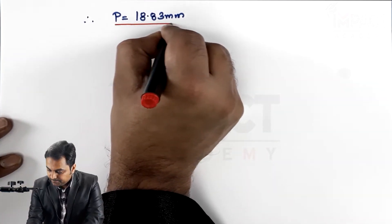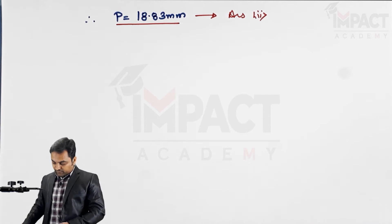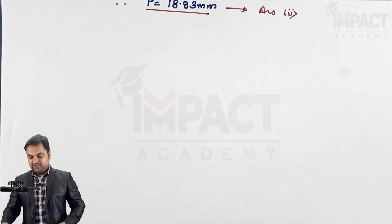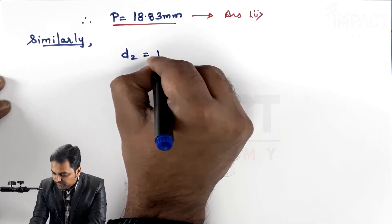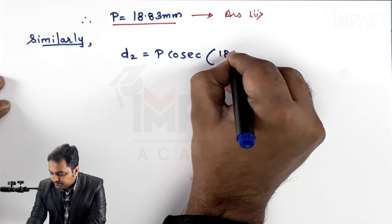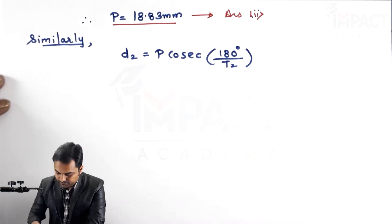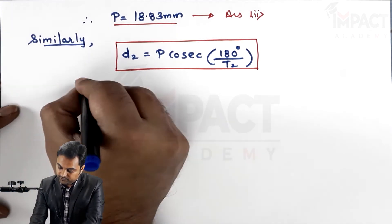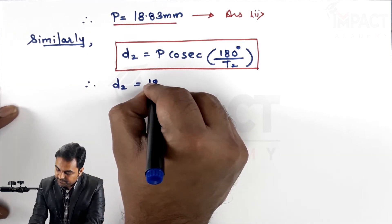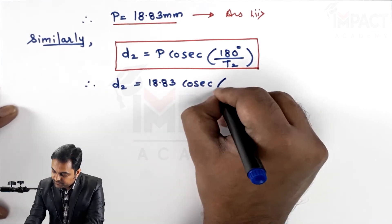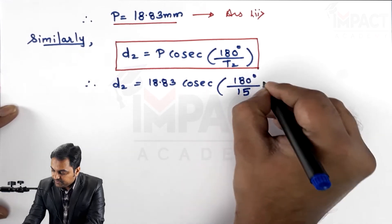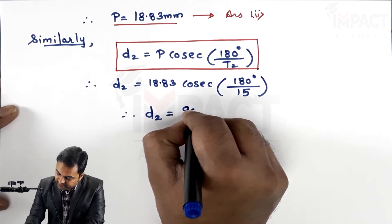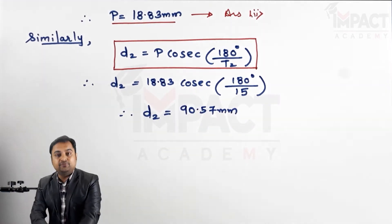Now that the pitch has been calculated, I can find d2, the diameter of the driven sprocket, using the same relation: d2 = p × cosec(180°/t2). Substituting p = 18.83 mm and t2 = 15 gives d2 = 18.83 × cosec(180°/15), which comes out to be 90.57 mm. That is the pitch circle diameter of the driven sprocket.